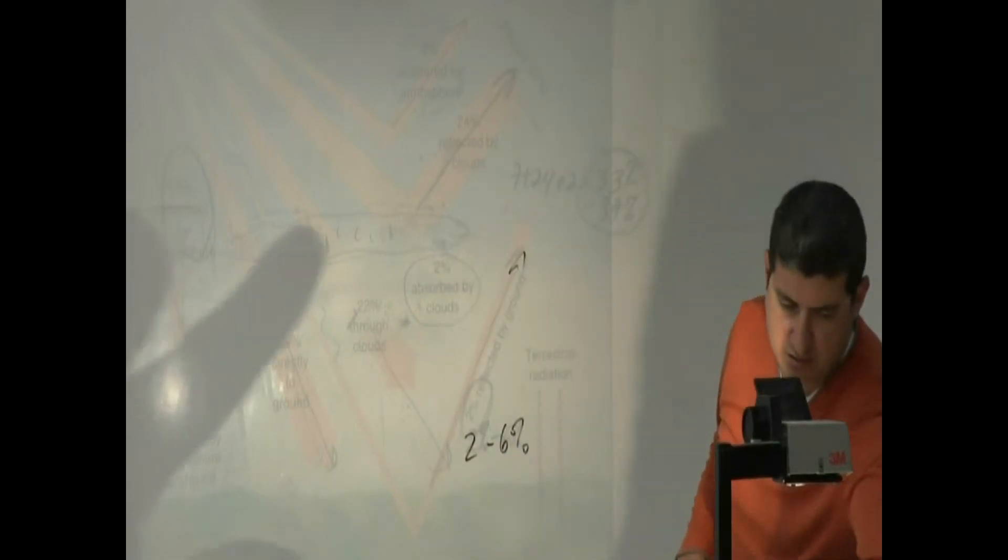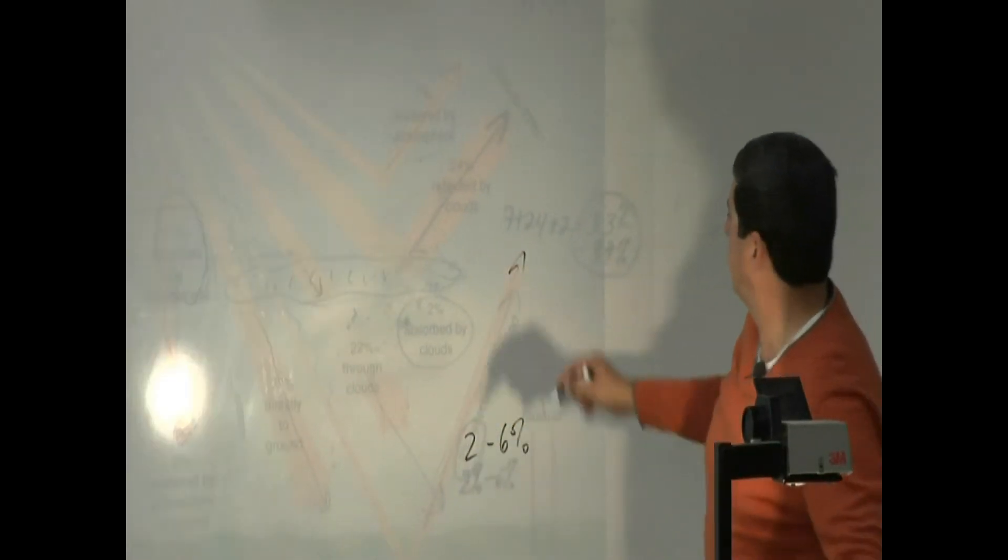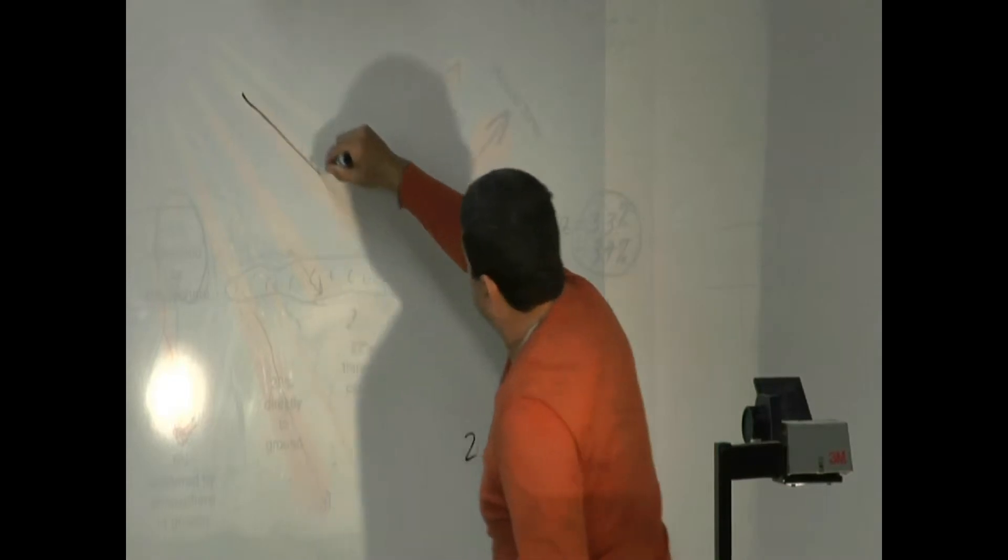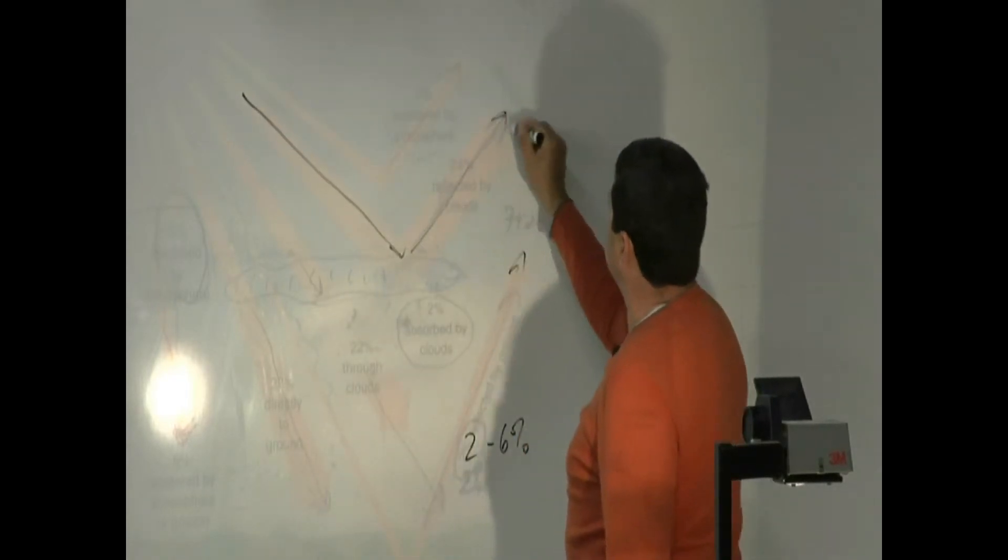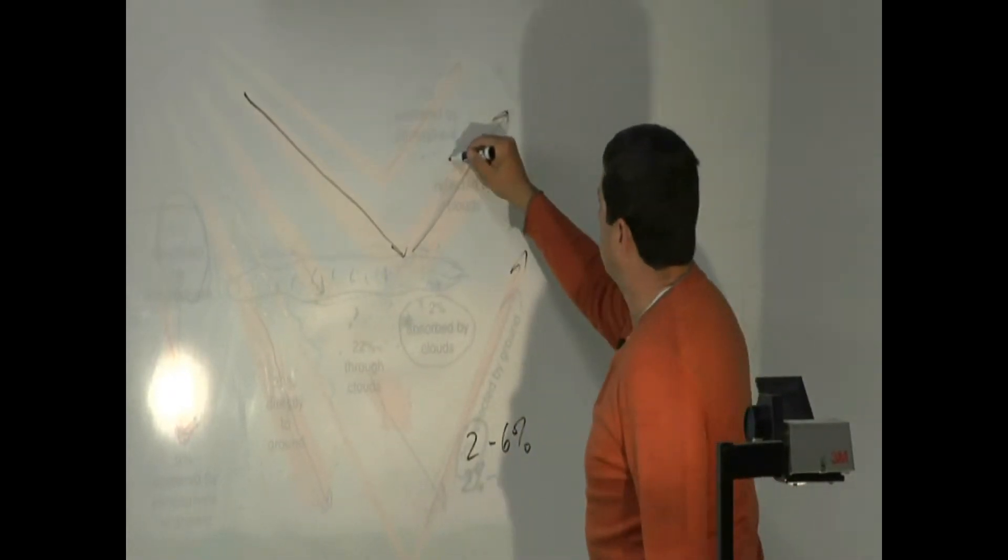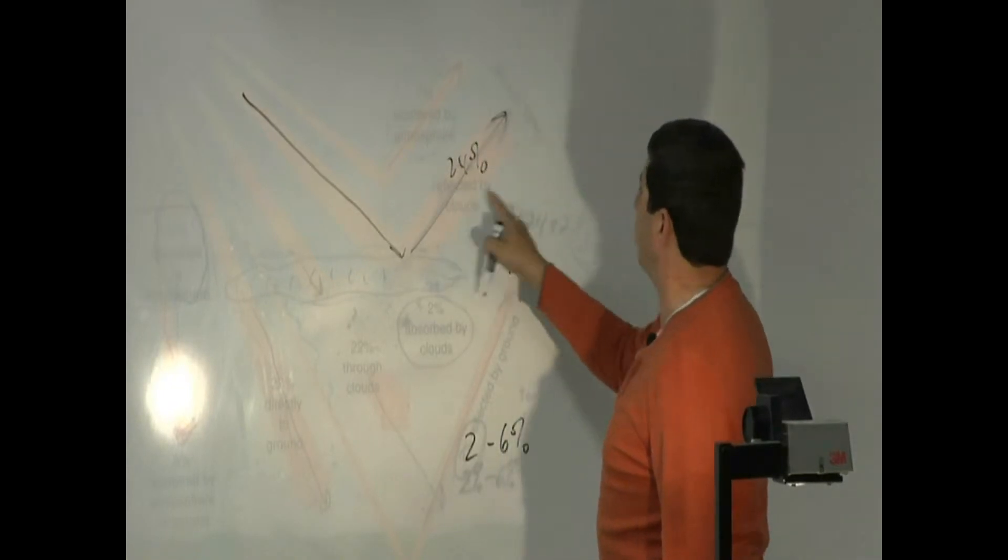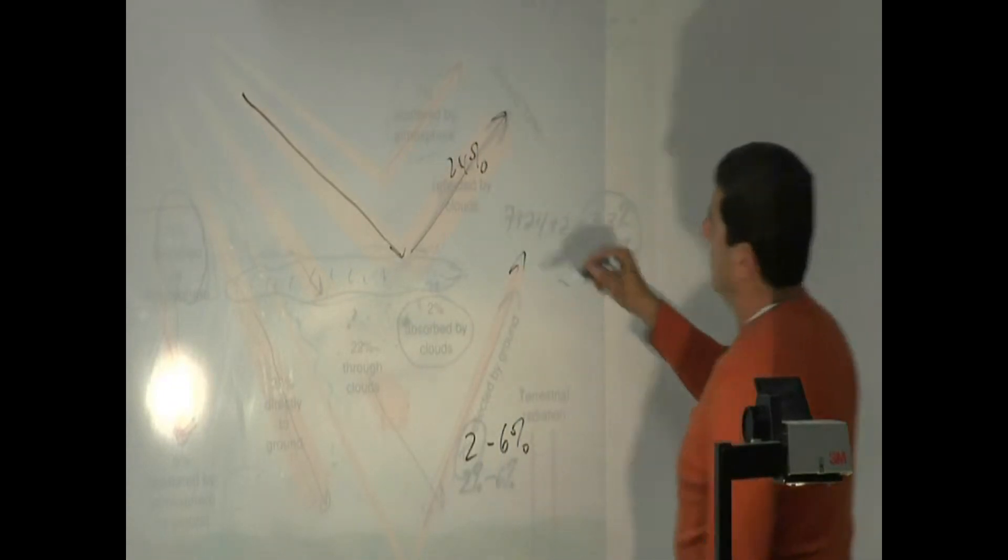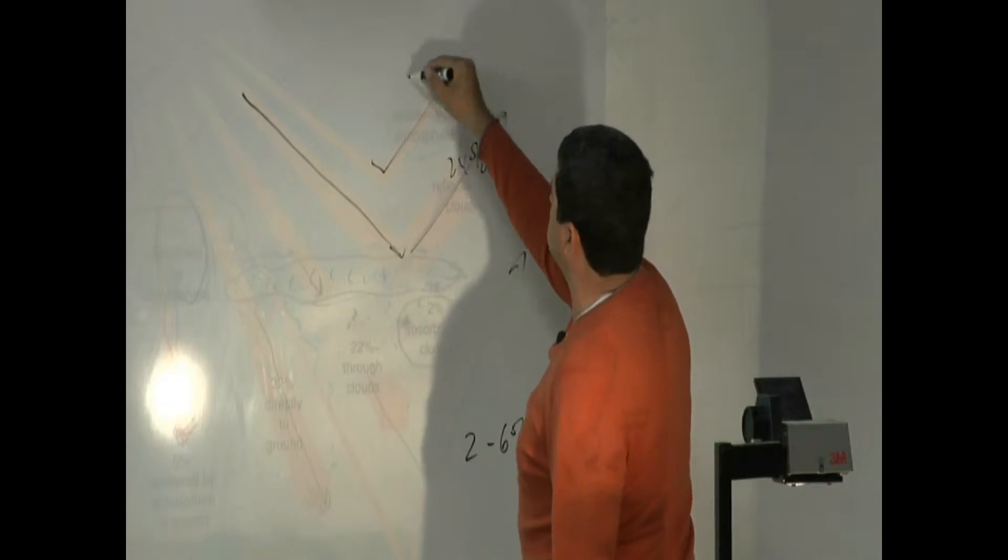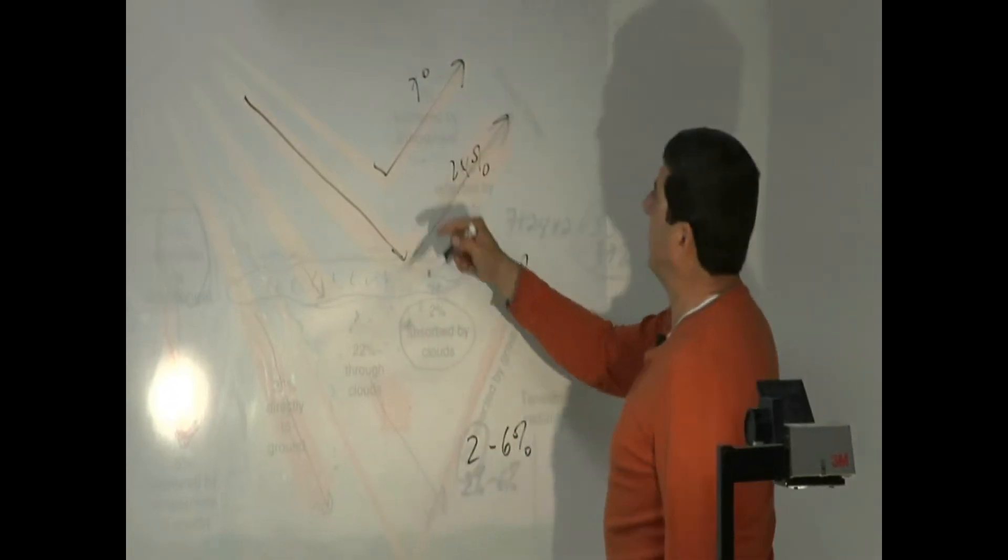Then we have here 24% of the energy hitting the clouds is sent back. 24% reflected by clouds. 7% scattered by the atmosphere.